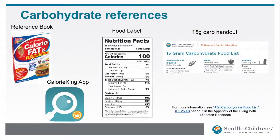Once you have quantified the food, the final step is to locate carbohydrate references. Most people estimate carbs using a few references: labels, carb lists, apps, and websites are all good tools to find carbs. Let's go through some tips for using these references.